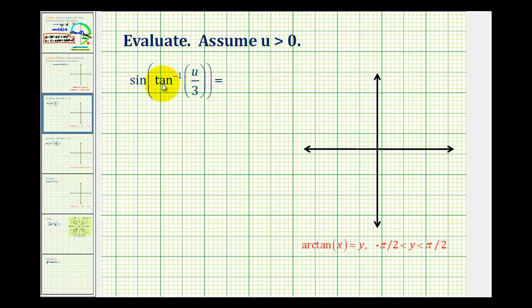Looking at inverse tangent of u over three, this tells us there's an angle, let's call it angle A, that has a tangent function value of u divided by three. Another way to express this would be to say the tangent of A is equal to u divided by three.